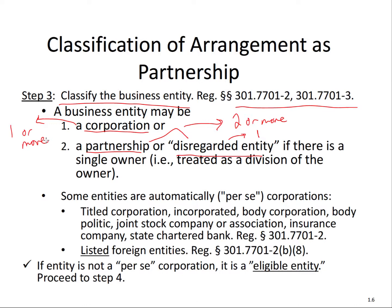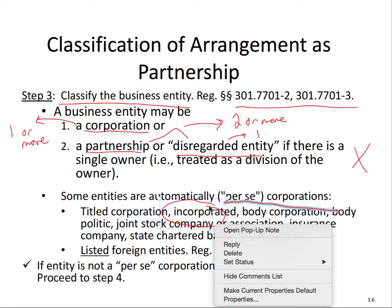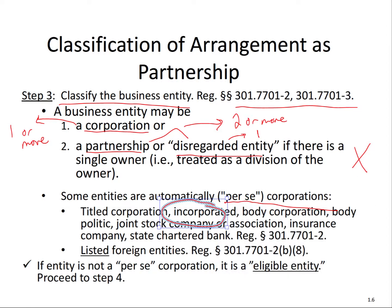There are some per se corporations out there where it's not possible to be treated as anything else. If you're a per se corporation, you automatically cannot be a partnership or disregarded entity. The regulations summarize this: a corporation under state law — an incorporated body — is a per se corporation. There are also certain types of foreign entities that translate to a U.S. corporation, and those are listed with further guidance available.